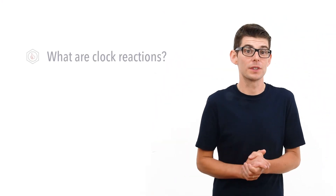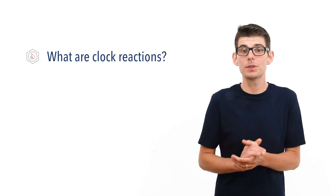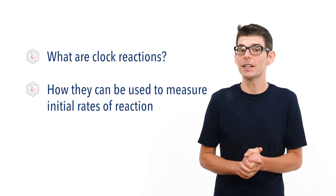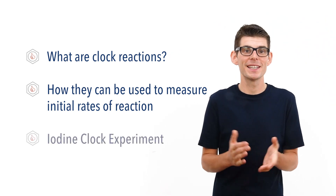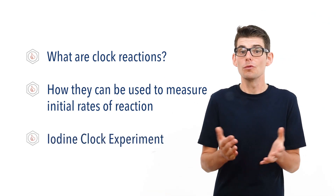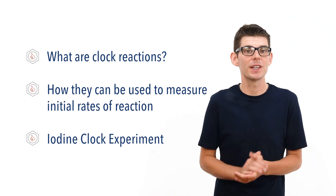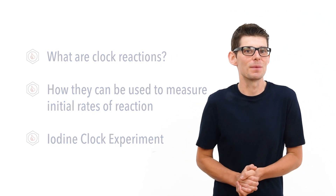Hello, Matt here from chemistrystudent.com. In this video we're going to look at clock reactions and specifically the iodine clock experiment. We're going to talk about what clock reactions are, how they can be used to measure initial rates of reactions, and go through the iodine clock experiment in detail. Rates of reaction, orders, and rate equations have been covered in separate videos — check the links in the description below.